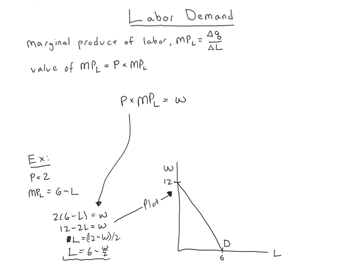So using our key equation — value of marginal product of labor equals wage — we set up an equation. We could plot that equation and get our labor demand, as we saw over on the graph. Or we could rearrange that equation and get our standard labor demand equation the way we like to have it written out. The important thing here is really understanding this key equation: value of marginal product equals the wage.